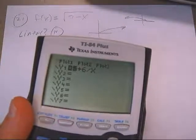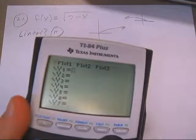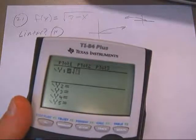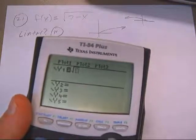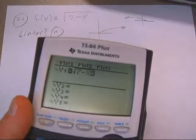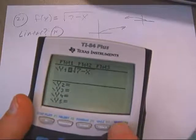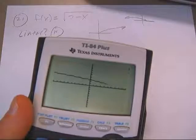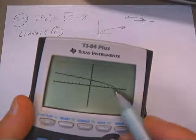Right here, just watch what happens when you put in the square root of—and I want to put in 7 minus x—and then graph that thing. You're going to see that you get a curve.